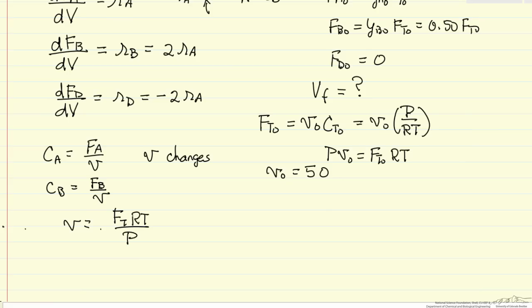Again, this is the ideal gas law. Now we have another variable, F total, the total molar flow rate, and the total molar flow rate is what's changing, and that's the flow rate of A at any point in the reactor, plus the flow rate of B, plus the flow rate of our product D, plus the flow rate of our inert.